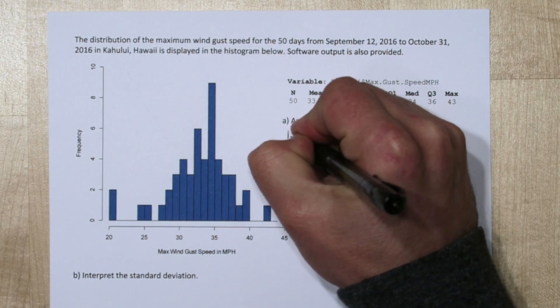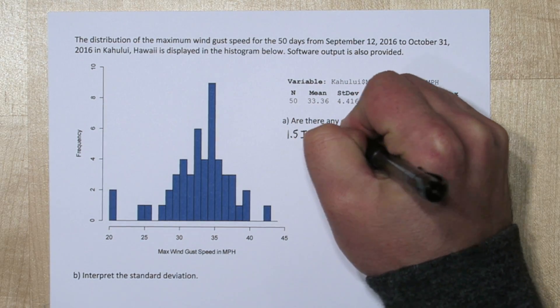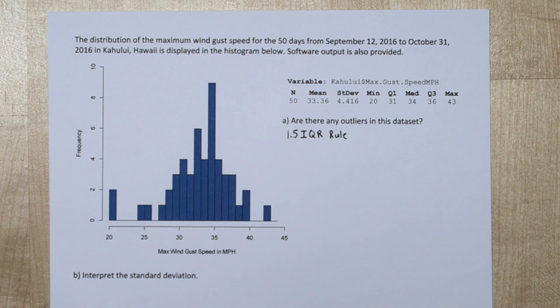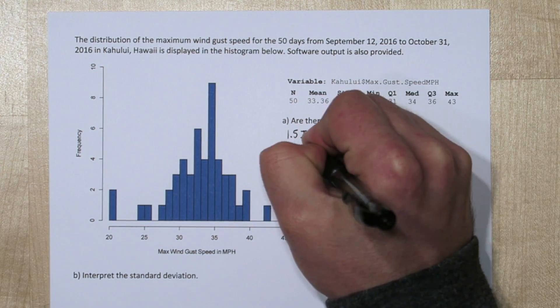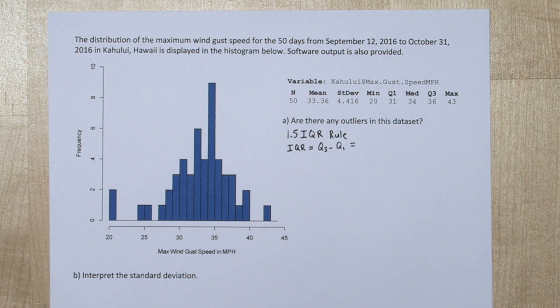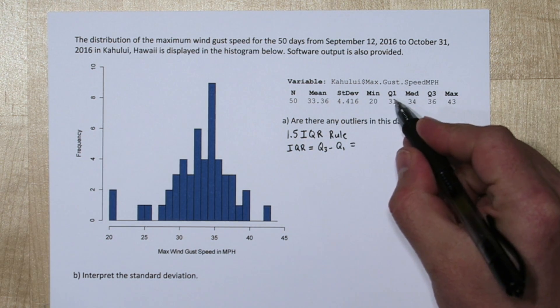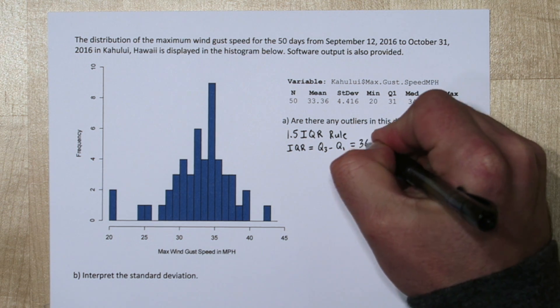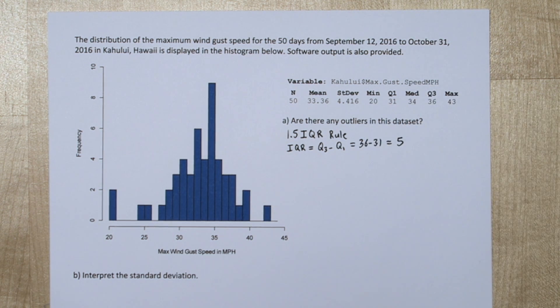To look for outliers, we're going to use the 1.5 IQR rule. First we need to find the IQR, which is the interquartile range. It's simply quartile 3 minus quartile 1. From the computer output we see quartile 3 is 36 and quartile 1 is 31. So our interquartile range is 5.